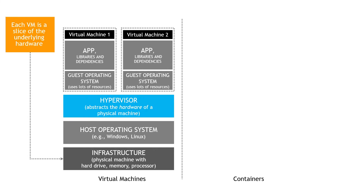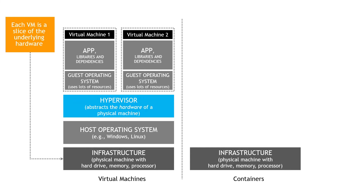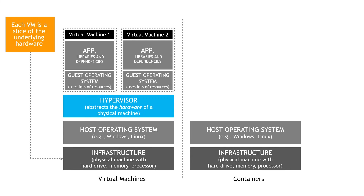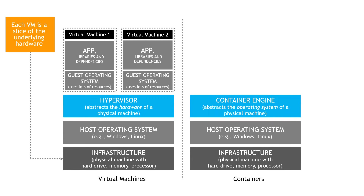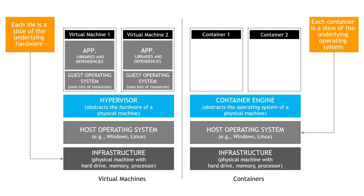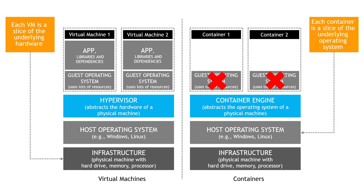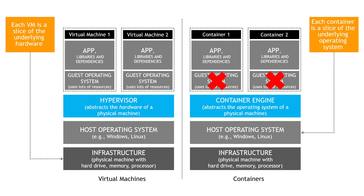Now let's contrast that with containers. You can think of containers as mini virtual machines if that helps you get the concept. Again, starting with infrastructure — the physical machine with hard drive, memory, and processor. Then similar to VMs, you have a host operating system installed on top of it. And then instead of your traditional hypervisor, you have a container engine, which abstracts the underlying operating system from the physical machine. This means that each container gets a slice of the underlying operating system, which means you don't need to install separate operating systems for each container like you would with VMs. So you don't have to run a bunch of OSes eating up the valuable resources of the underlying physical machine. Your app and libraries, dependencies, and so on run in the containers. This is why containers are lighter weight and much faster to start, because you don't have to boot up virtual machines and operating systems every time you want to spin one up.